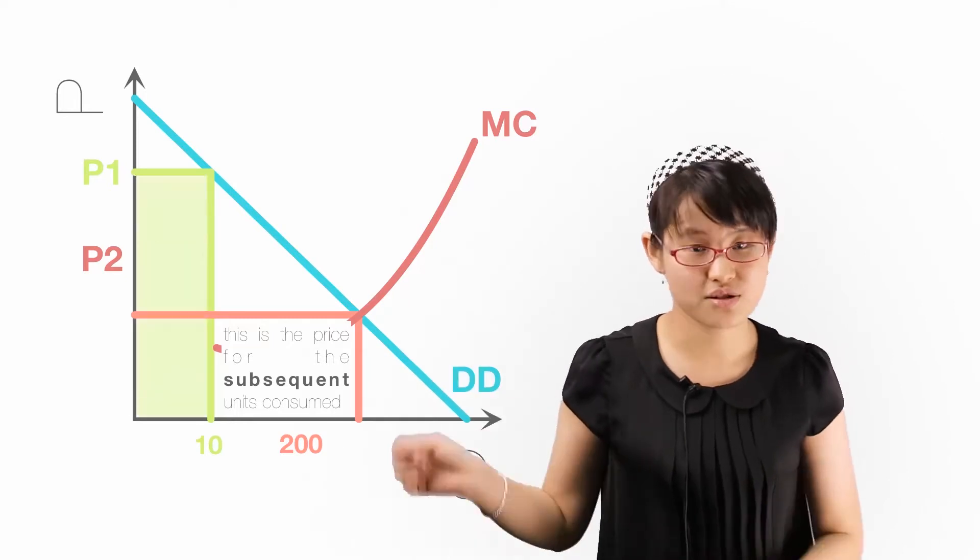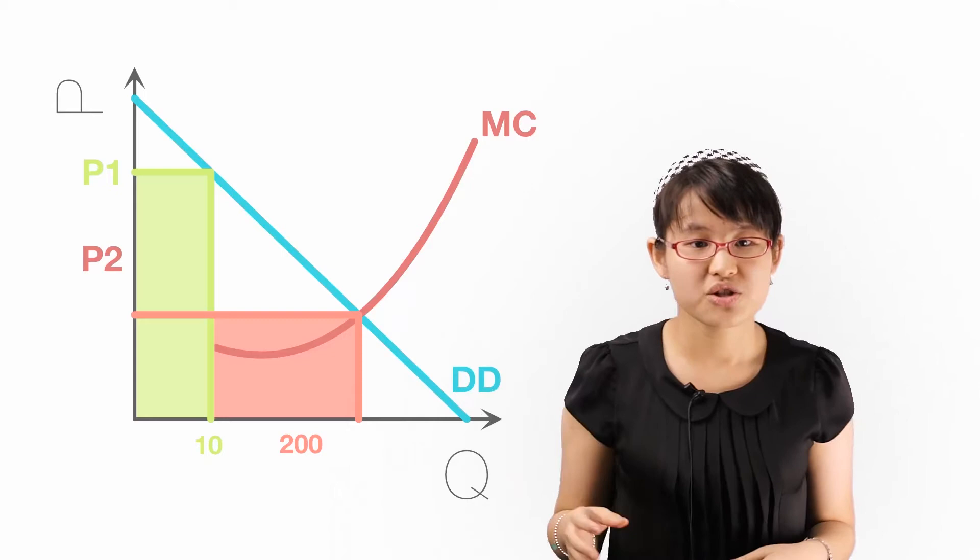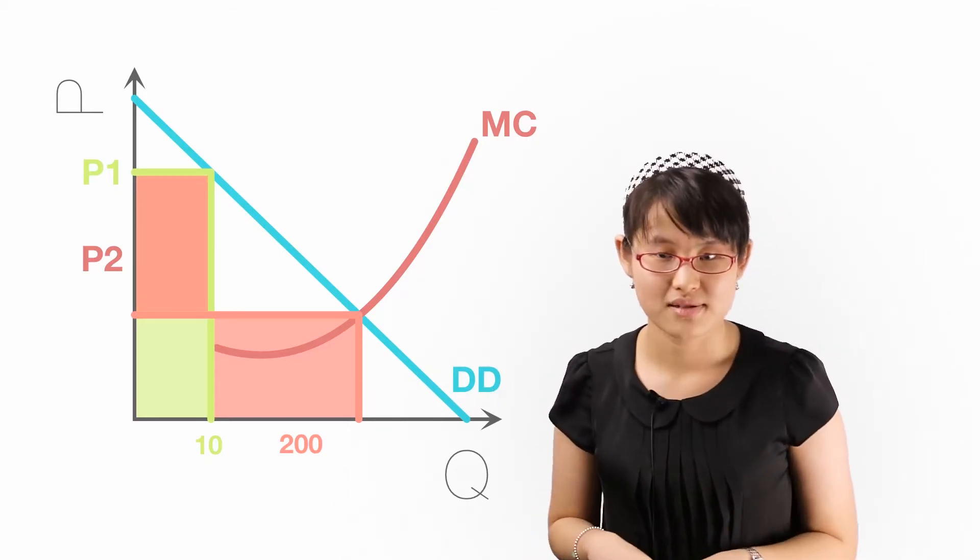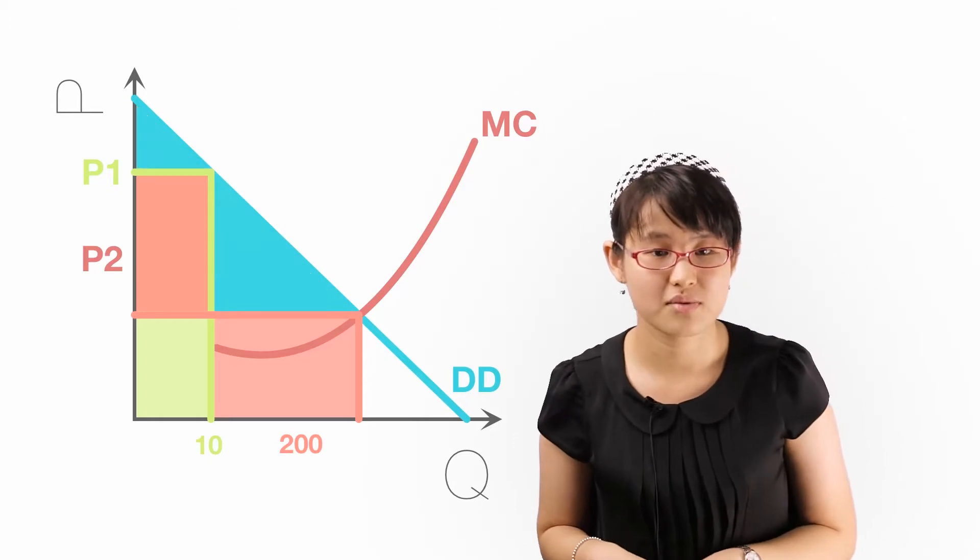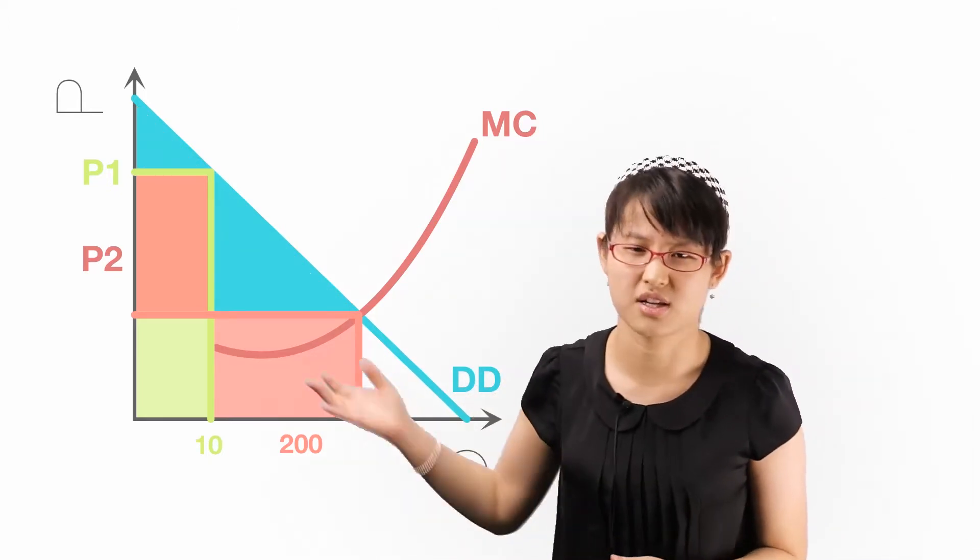So in this case, the MR's gradient is, as usual, twice of AR, which is the demand curve. The additional revenue gained by the monopoly is equal to the loss of consumer surplus. Notice that this form of price discrimination does not take away the entire consumer surplus, though it does take away a significant portion.